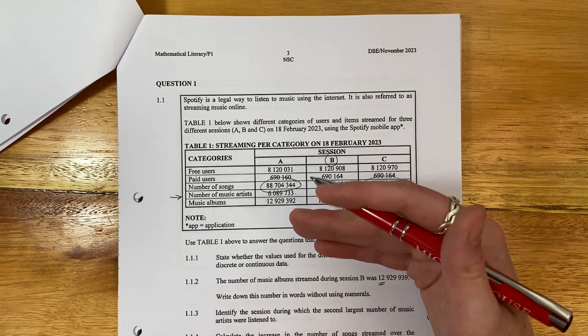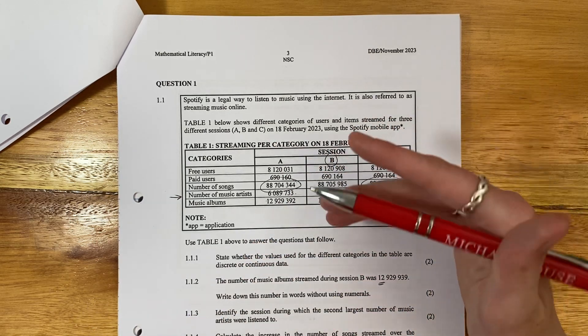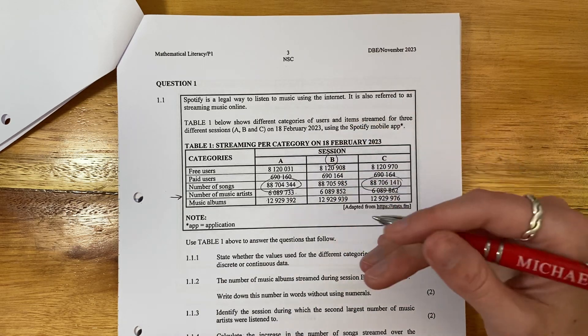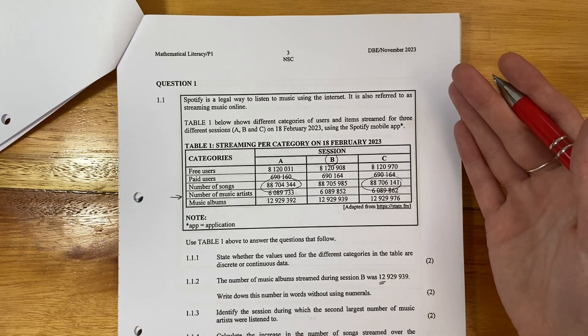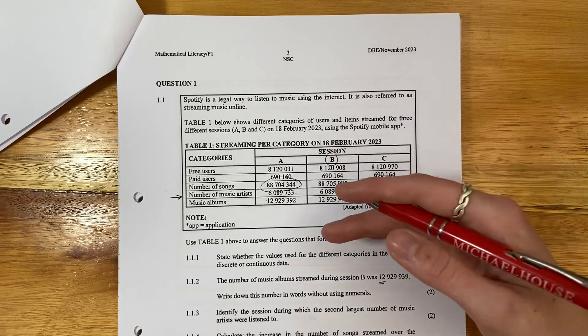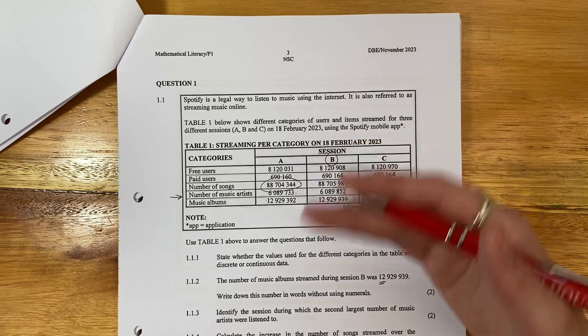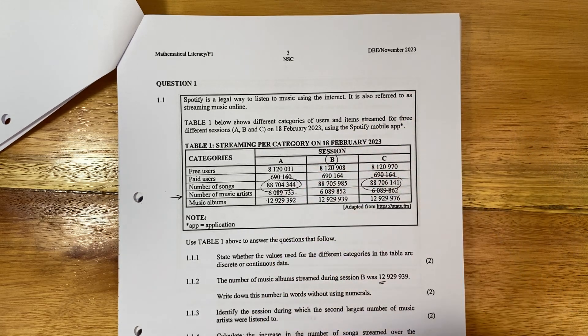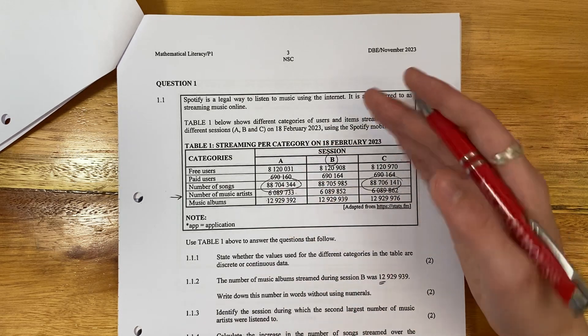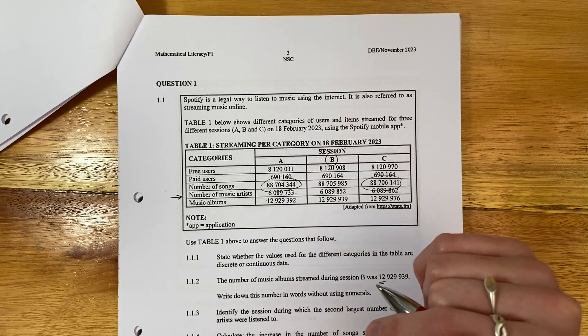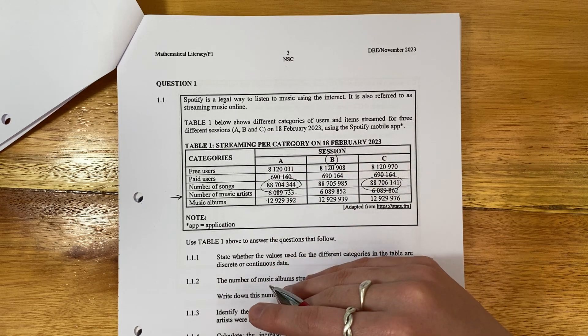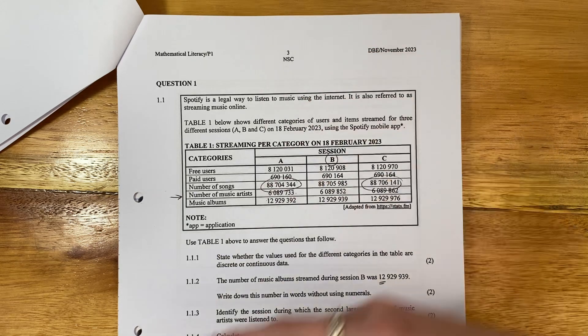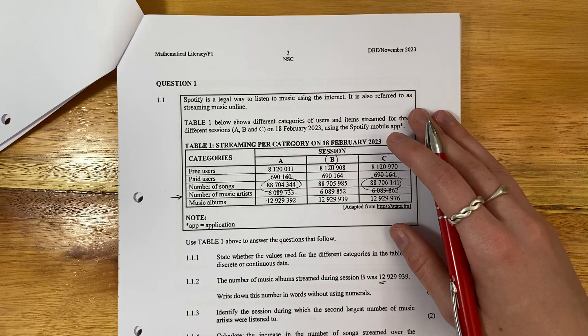So discrete means it can only take on a set number in a specific interval of numbers. So for example, you can be in grade 10 or 11 or 12. You can't be in grade 10 and a half, 11 and a half. That's what discrete is. You can only take on specific numbers. Continuous means you can take on any value in an interval. So let's say, for example, your weight. You can be 63.1 kgs or you could be 63.2 kgs. That's continuous. You can take on any value, but in a specific range.